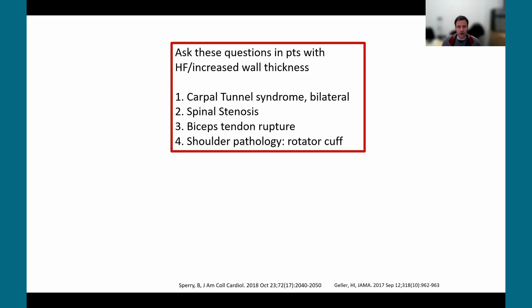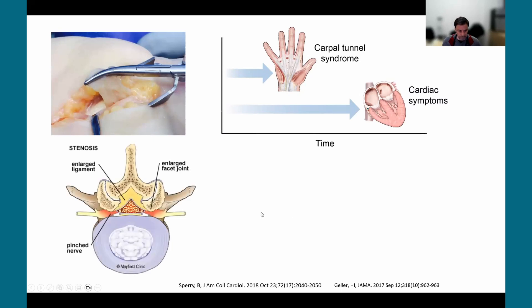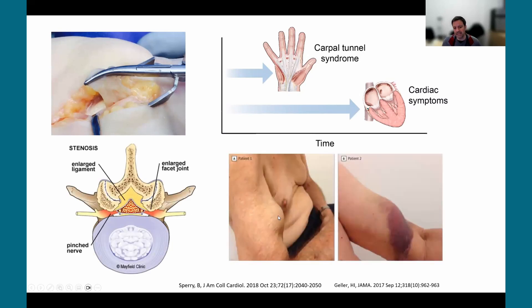Orthopedic and ligamentous issues are shared by both subtypes of ATTR. Bilateral carpal tunnel syndrome, spinal stenosis, biceps tendon rupture, and shoulder or rotator cuff pathology are not uncommon, and they often precede the cardiac manifestations of TTR. Carpal tunnel soft tissue can stain positive for amyloid and is often symptomatic many years before the cardiac disease. Biceps tendon rupture occurs in 10 to 30% of patients with wild-type ATTR, often producing a Popeye arm deformity.